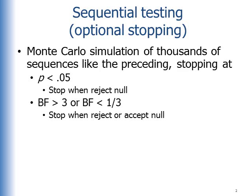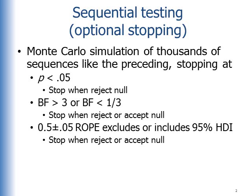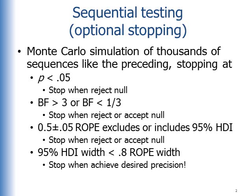Or we'll stop when the Bayes factor is greater than three or less than one-third, which means we stop and reject or accept the null according to this model comparison. Or we'll stop when this ROPE excludes or includes the 95% HDI, which means we'll stop and reject or accept the null according to this other Bayesian criterion. Or we'll stop when the 95% HDI width is less than 0.8 of the ROPE width—that is, we'll stop when we achieve a desired precision.